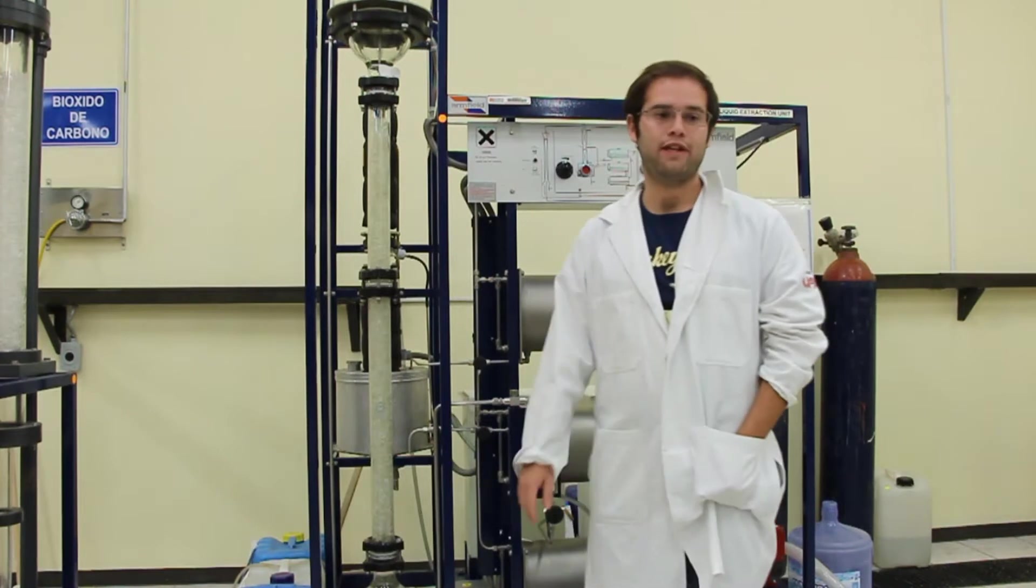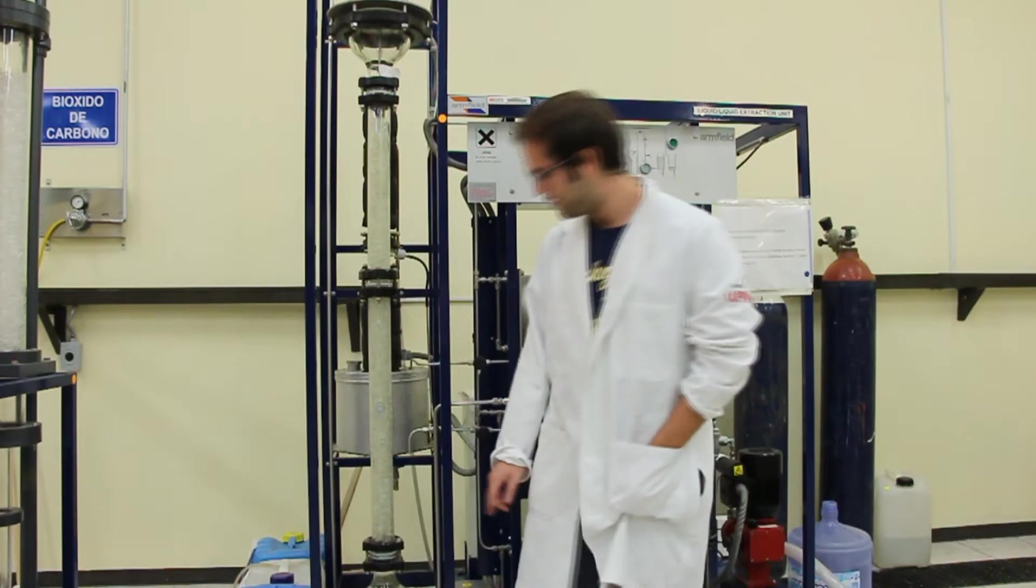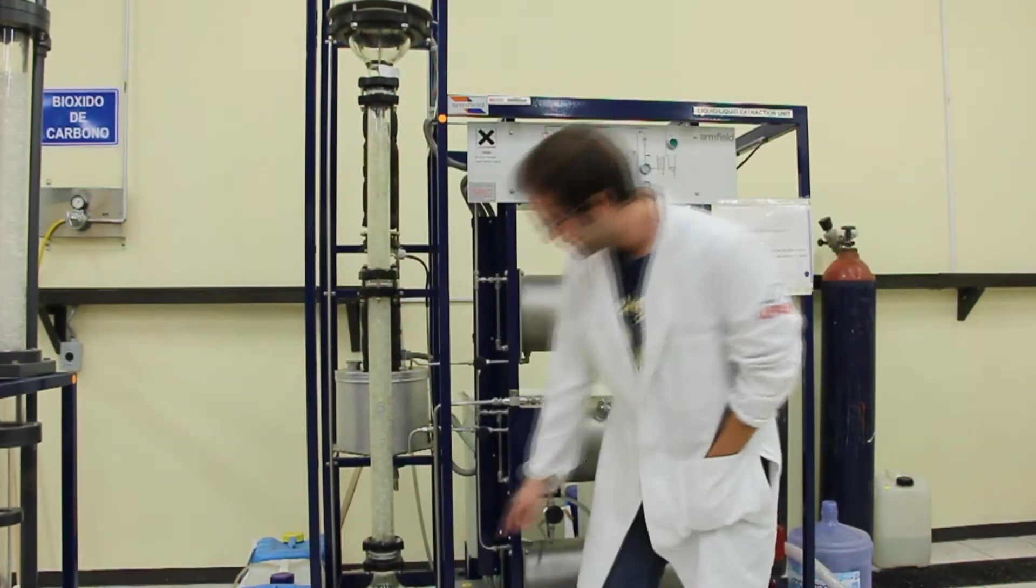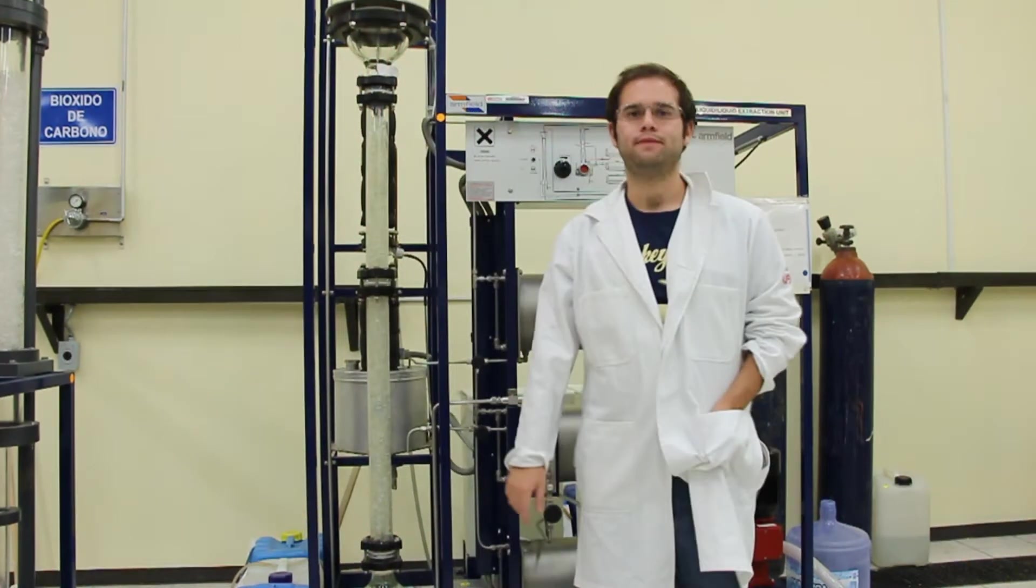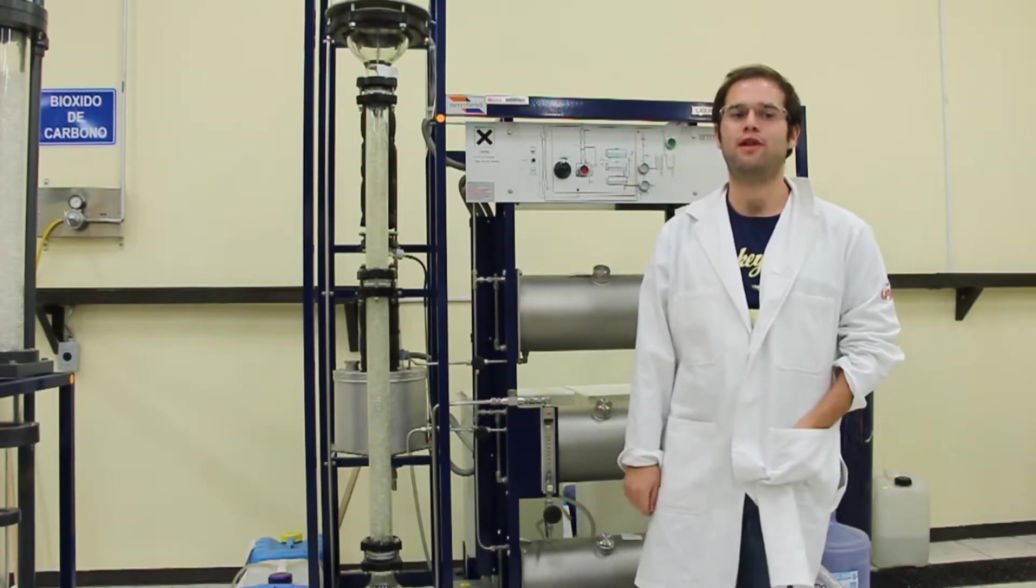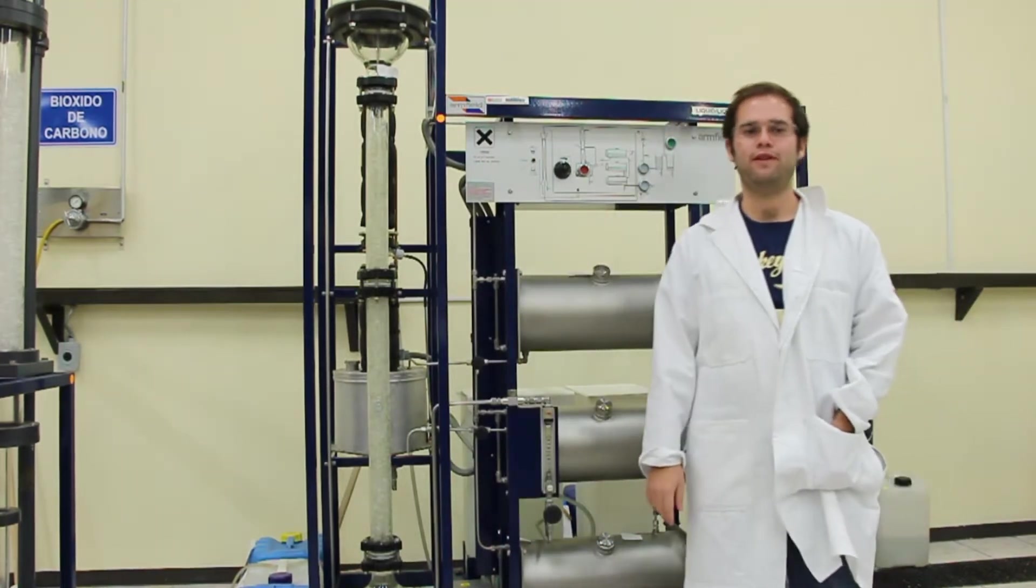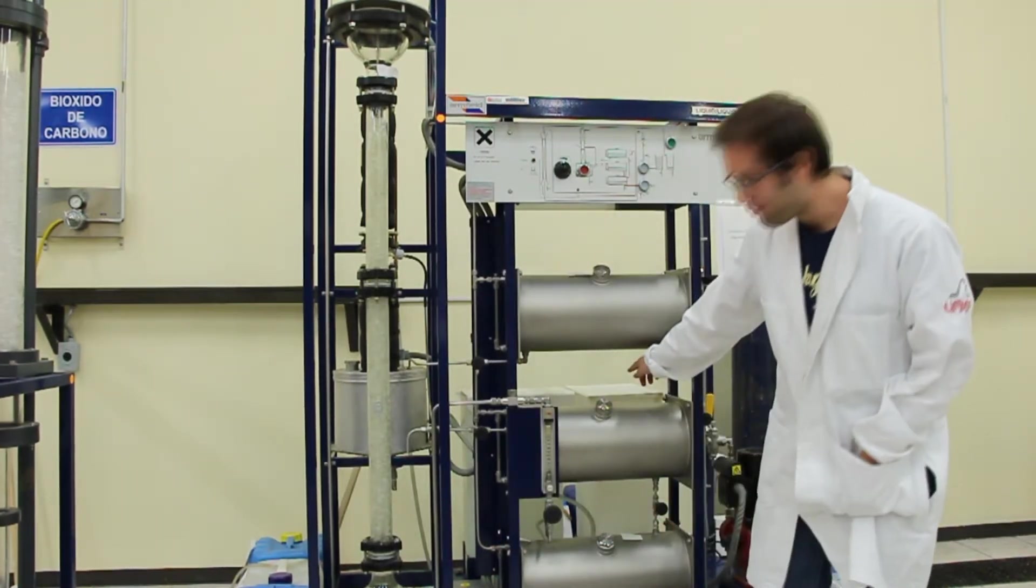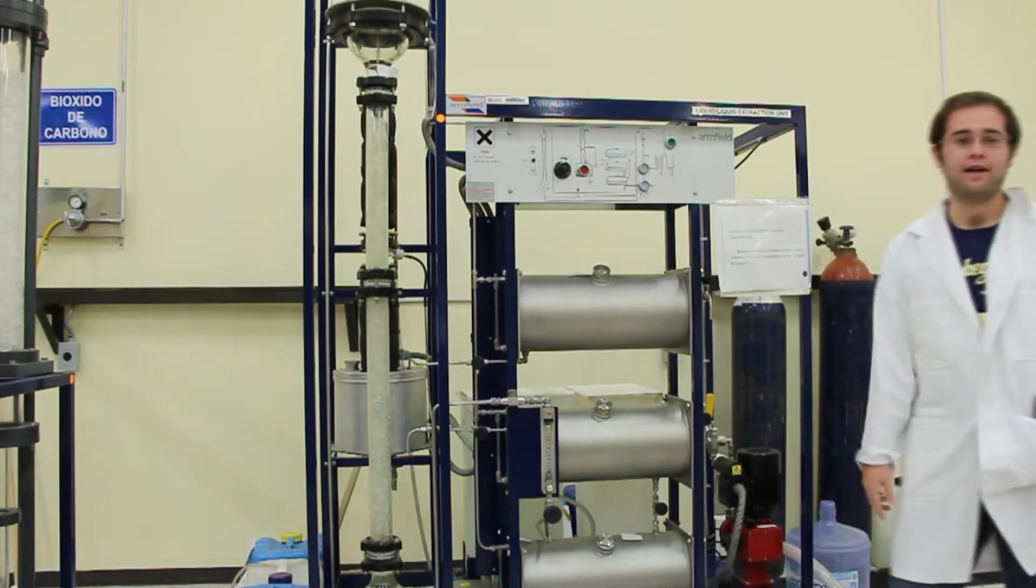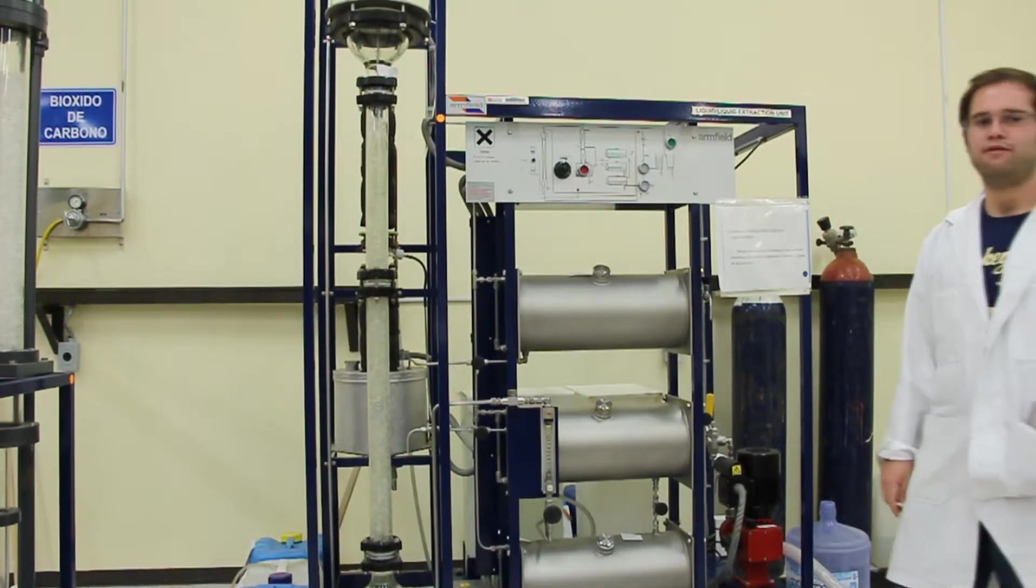The glass liquid liquid extraction column is fitted with a large end section, which are closed by stainless steel plates. The column is filled with Raschig rings which are supported on a perforated stainless steel plate. Water for the column is stored in the supply tank, from where it is pumped by the centrifugal pump through an airplay valve and a flow control valve.